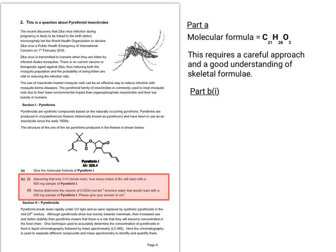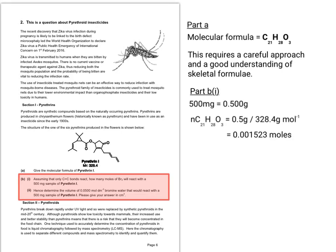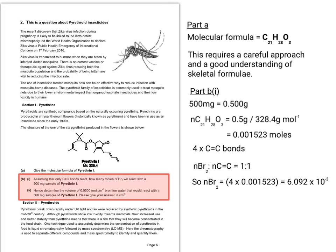Moving on to part B, it says: assuming that only the carbon-carbon double bonds react, how many moles of Br2 will react with a 500 milligram sample of pyrethrin-1? The first thing to do is to convert your milligrams into a mass you can work with in terms of moles. It's a simple case of doing mass over Mr to work out the number of moles of pyrethrin-1. Once you've done that, you can work out how many times bromine will react with pyrethrin-1, applying the logic that for every carbon-carbon double bond there's a 1-to-1 mole ratio between Br2 and the C=C double bond.